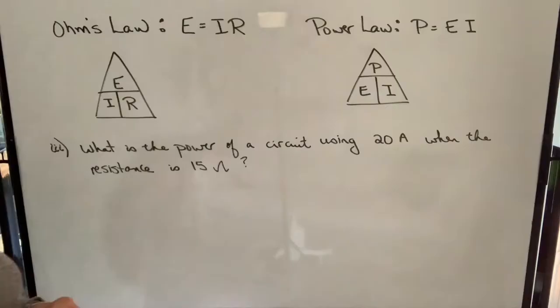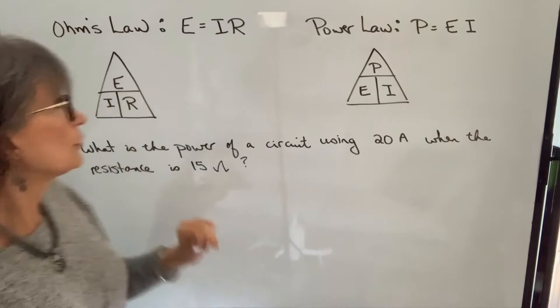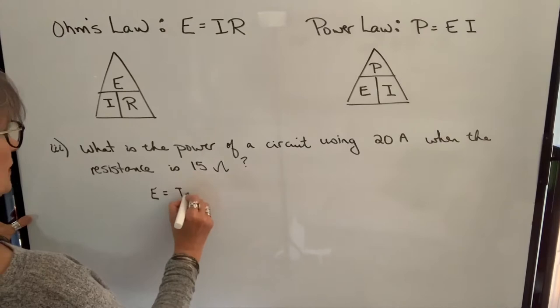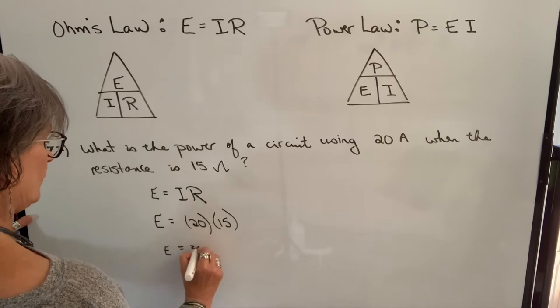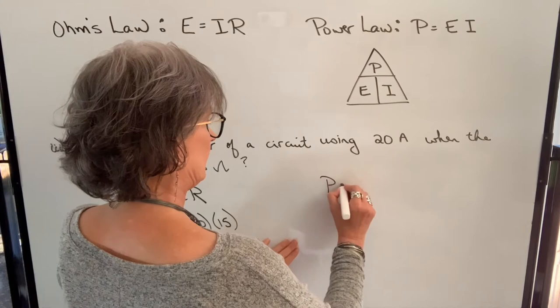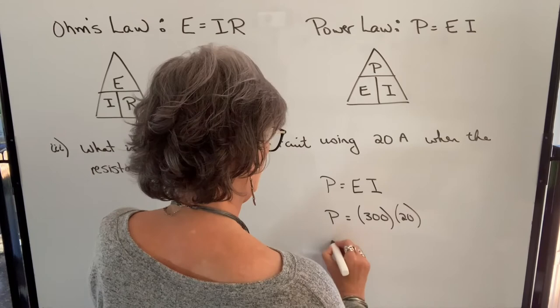In this next example, it says, What is the power of a circuit using 20 amps when the resistance is 15 ohms? We're trying to find power, but in order to find power, I need voltage and current. I don't have voltage. So I need to use Ohm's law and I use the resistance and current to find voltage first. So I know that E is equal to I times R. So I'm finding E. Current is 20. Resistance is 15. So E is equal to 300 volts. Now that I know voltage, I can find power. Power is equal to E times I. So we're finding power. Voltage is 300. Current is 20. So power will be 6,000 watts.